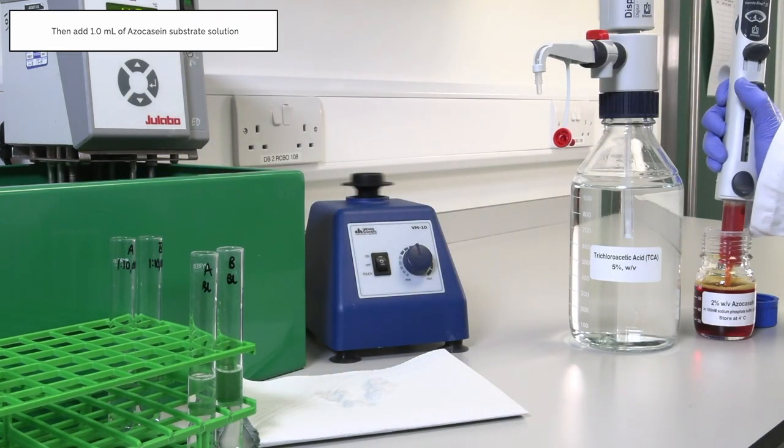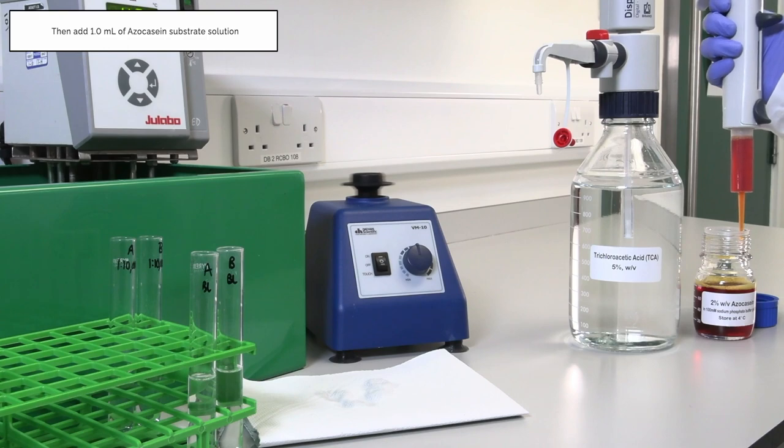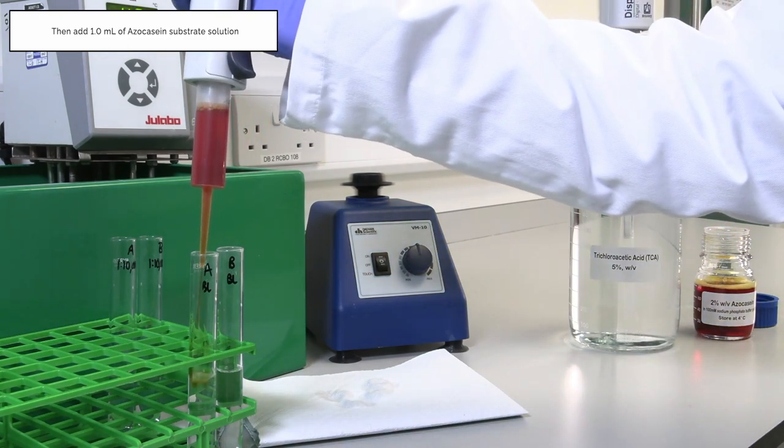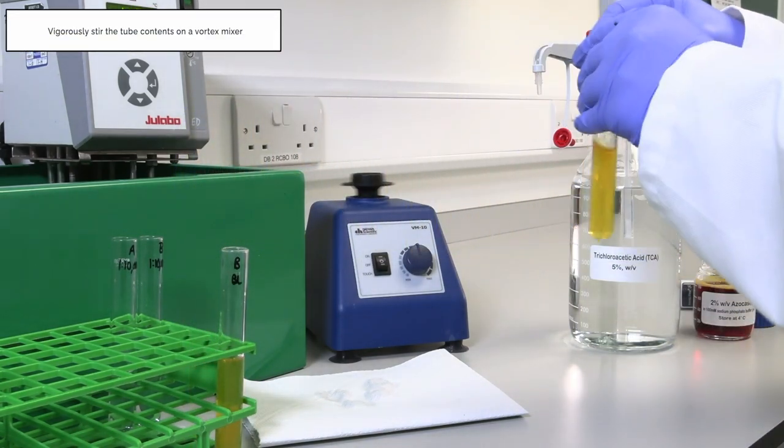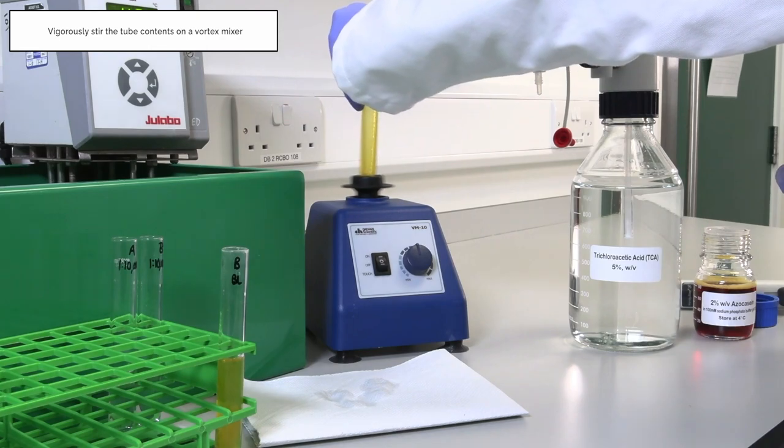Then add 1 ml of the azo casein substrate solution and vigorously stir the tube contents on a vortex mixer.